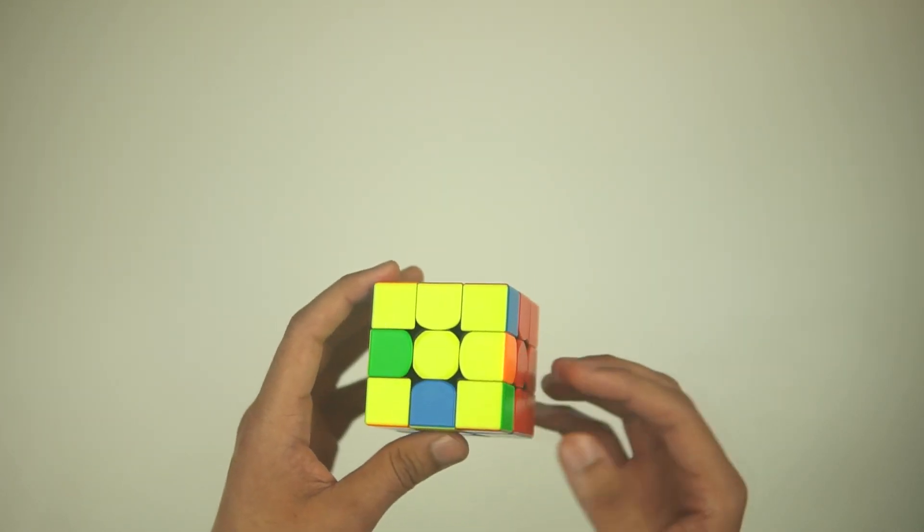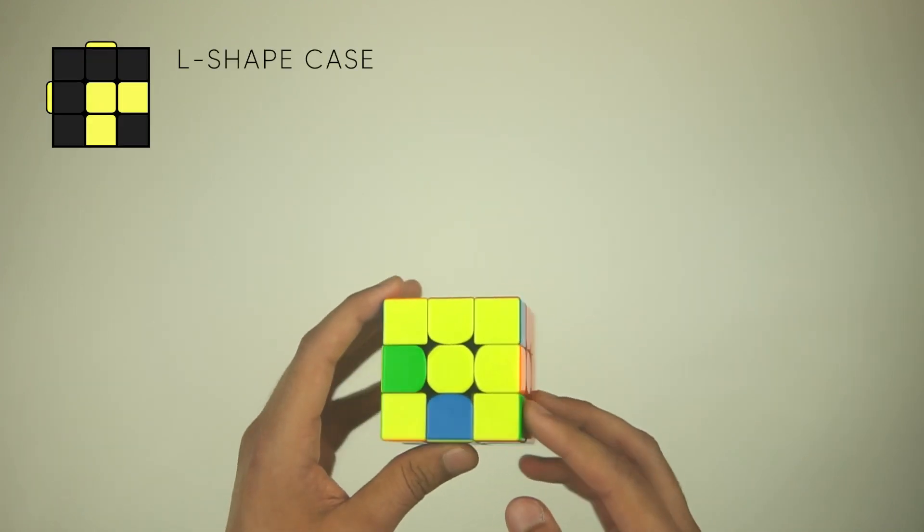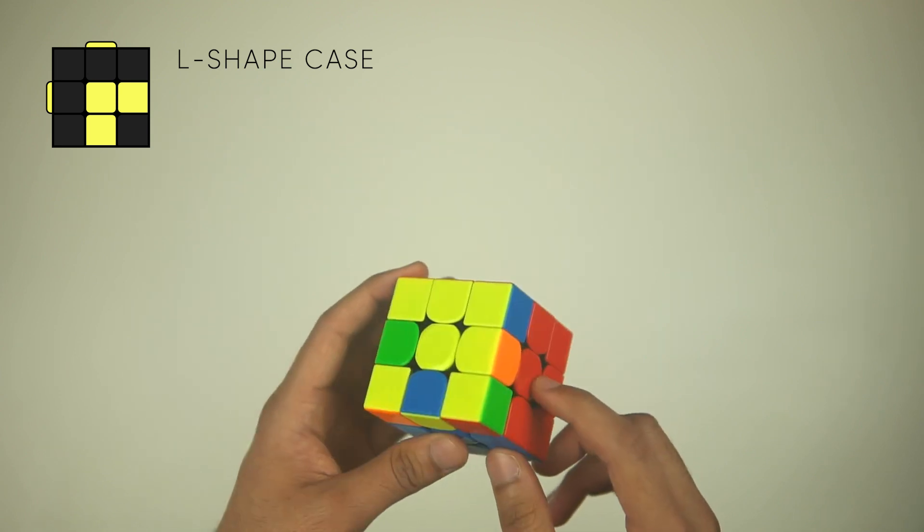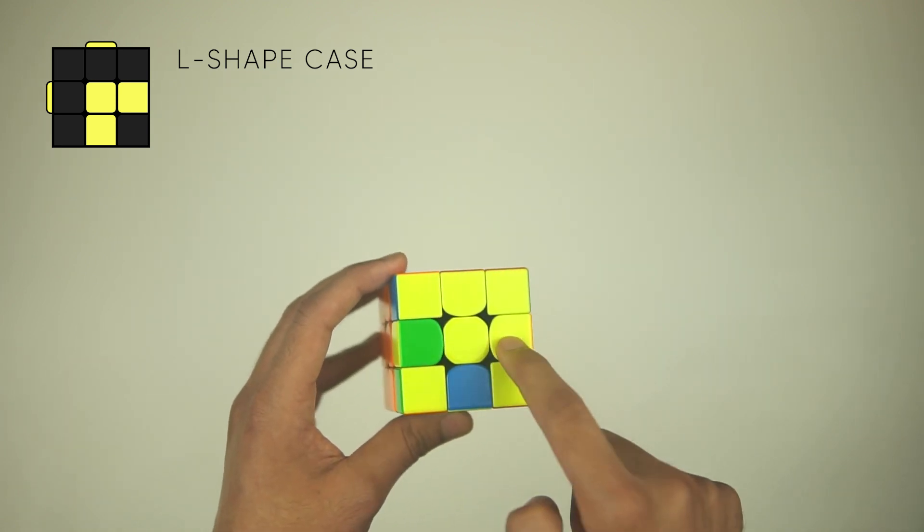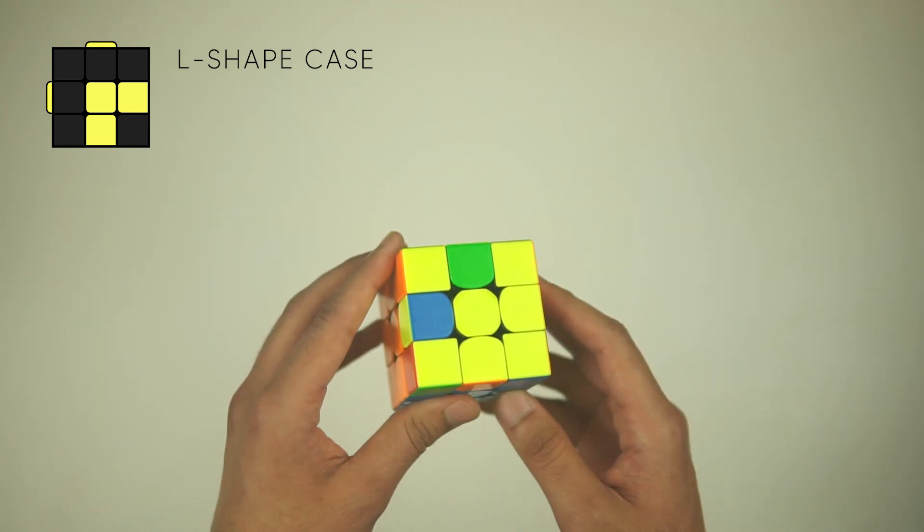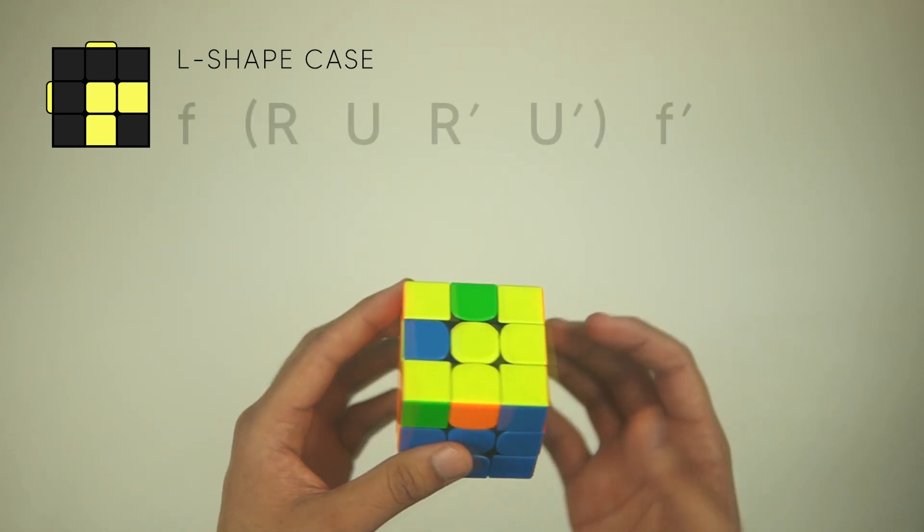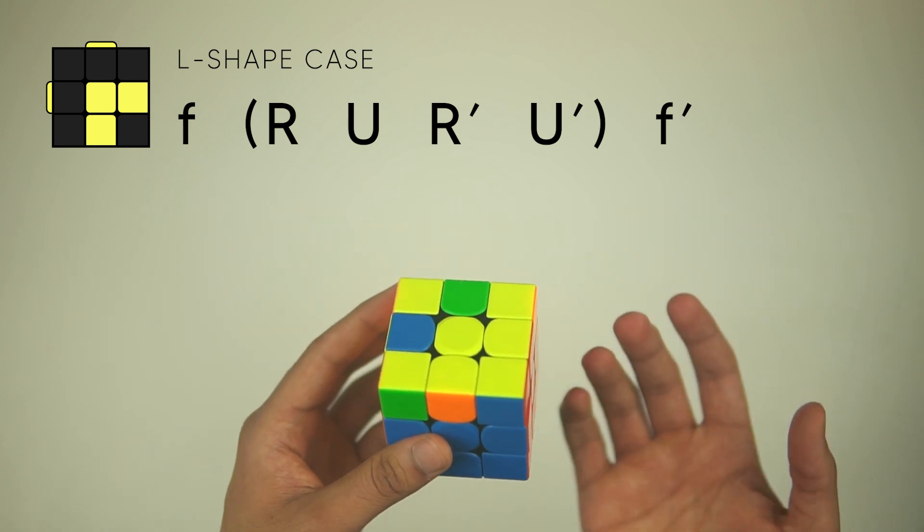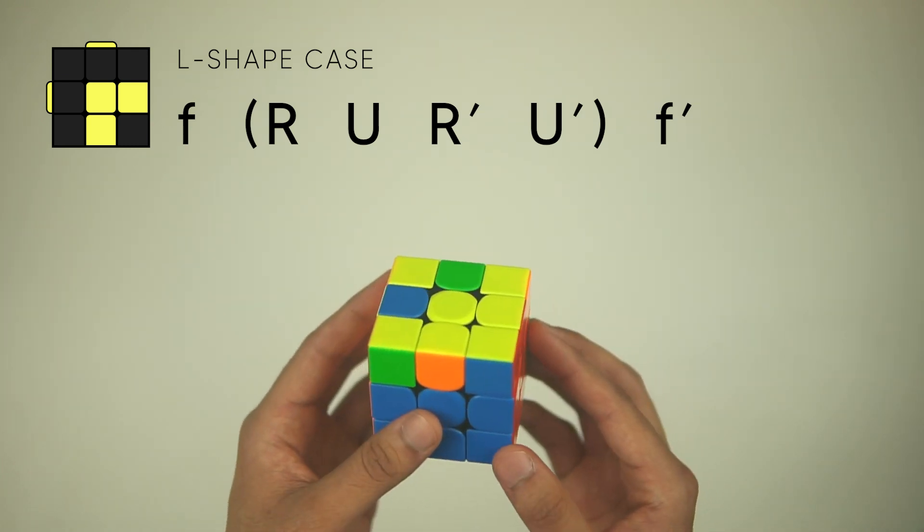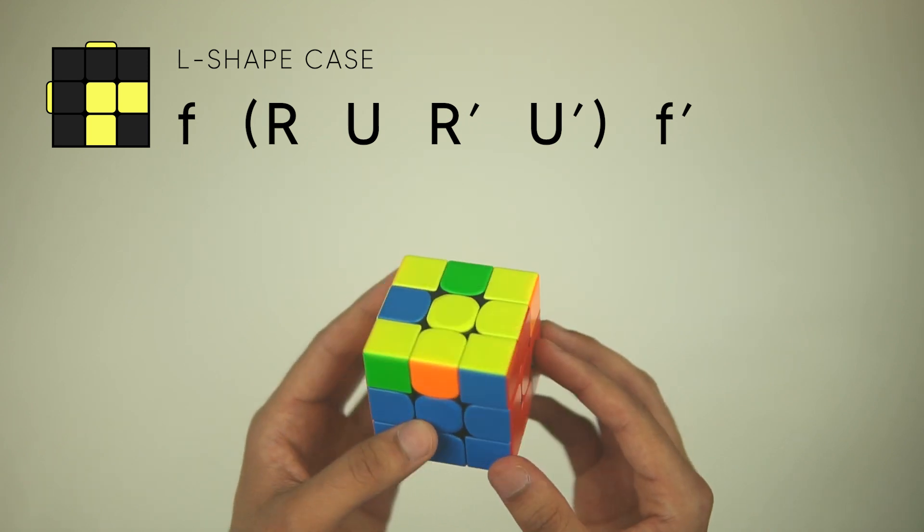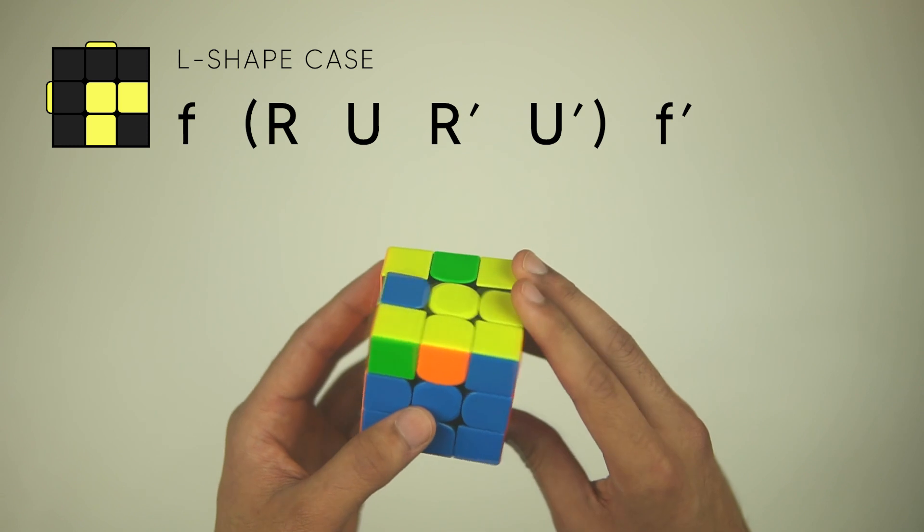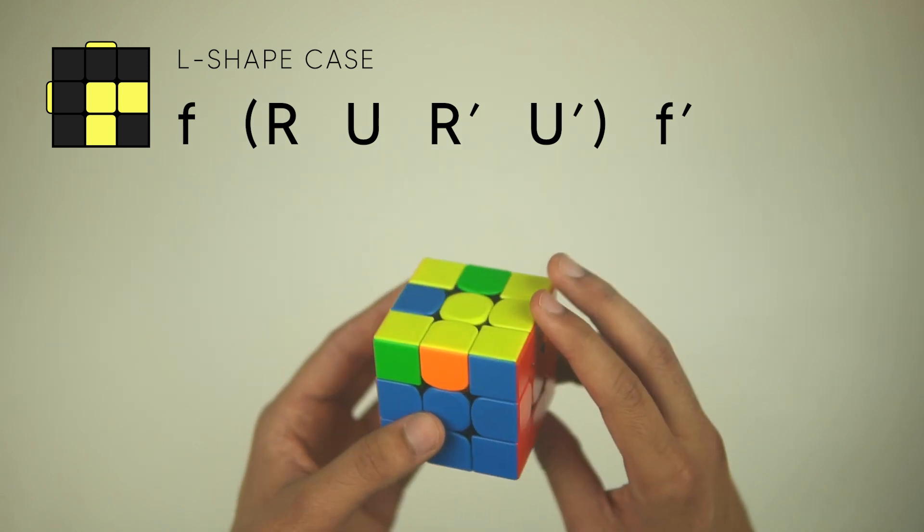You might also get this L-shape case, which is when you look at the edges and you have two edges solved that are adjacent to each other, and they create this L-shape. What you're going to do is hold the L in the bottom right like this, and we're going to perform this algorithm, which is very similar to the line case, but instead of regular F-moves, we're going to do lowercase F moves, which is just a wide F move, or when you move the middle layer with the F move.